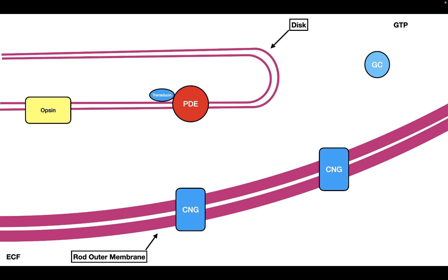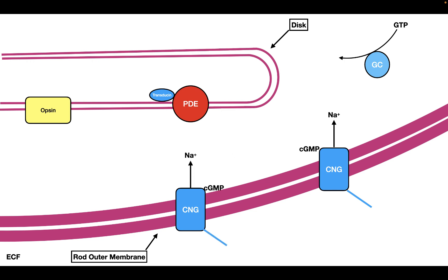Guanylate cyclase takes GTP and converts it to cyclic GMP. Now cyclic GMP, when it binds to the CNG channel, allows these channels to open, which allows sodium and calcium into the cell. This therefore produces the dark current that is present inside the rod cell during darkness. So when the rod cell is in darkness, the dark current is activated, which depolarizes the cell.